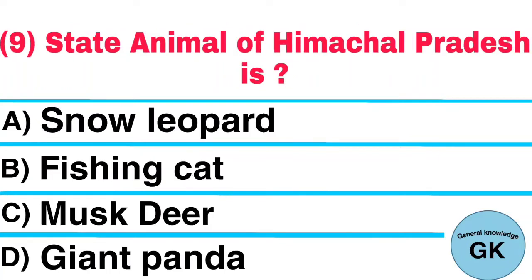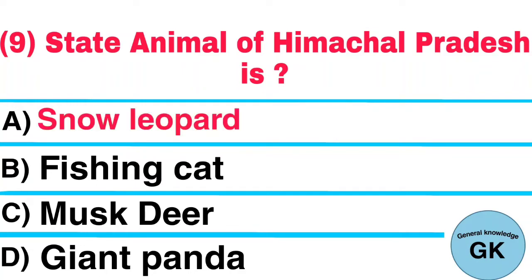Question Number 9. State Animal of Himachal Pradesh is: A. Snow Leopard, B. Fishing Cat, C. Musk Deer, D. Giant Panda. Answer: Snow Leopard.